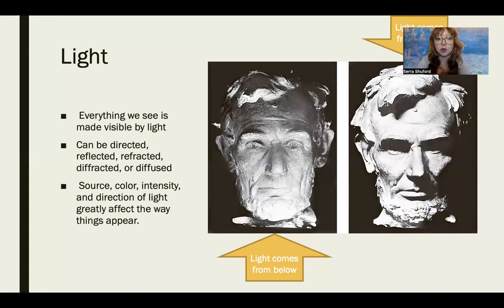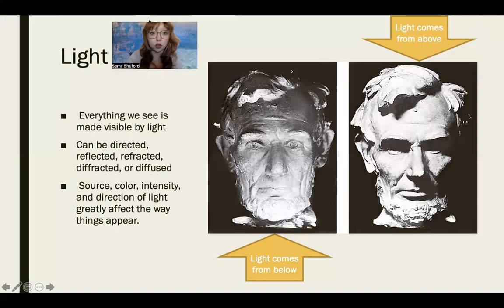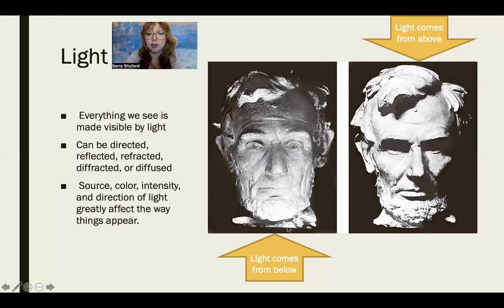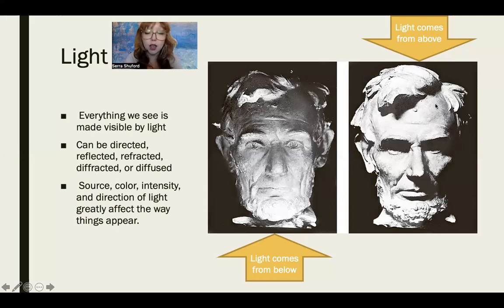Light can be directed, reflected, refracted, diffracted, or diffused. The source, color, intensity, and direction of light greatly affect the way things appear. This is an example using the Abe Lincoln statue in D.C. The only difference between these two images is that in the left, light is coming from below, and on the right, light is coming from above — which totally changes the expression and visual imagery of the statue entirely, just depending on where the light source is.